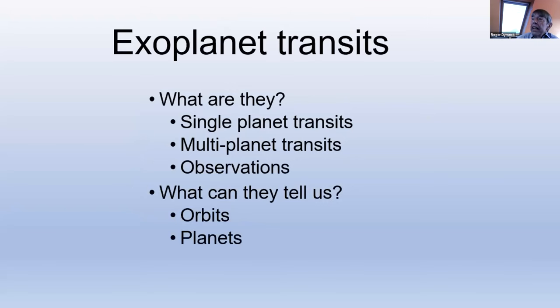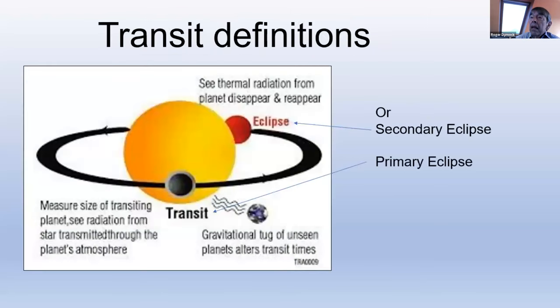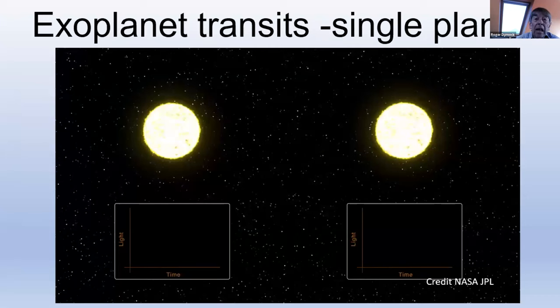Exoplanet transits. What are they? Single planets, multi-planets. Observations are the same. And what can they tell us about the orbits of the planets and the planets themselves? Some definitions. The passage of a planet in front of its host star can be referred to as a transit or primary eclipse, although transit is more common. And the passage of that planet behind the star is referred to as an eclipse or secondary eclipse.